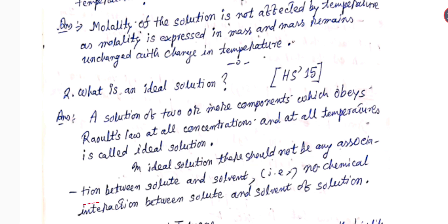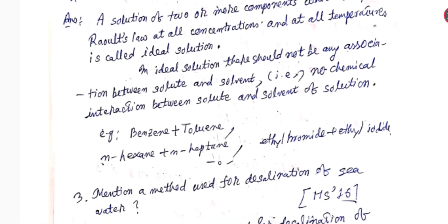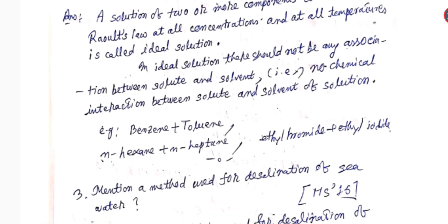In an ideal solution, there should not be any association between solute and solvent — that is, no chemical interaction. Examples include benzene plus toluene, hexane plus heptane, and ethyl bromide plus ethyl iodide.